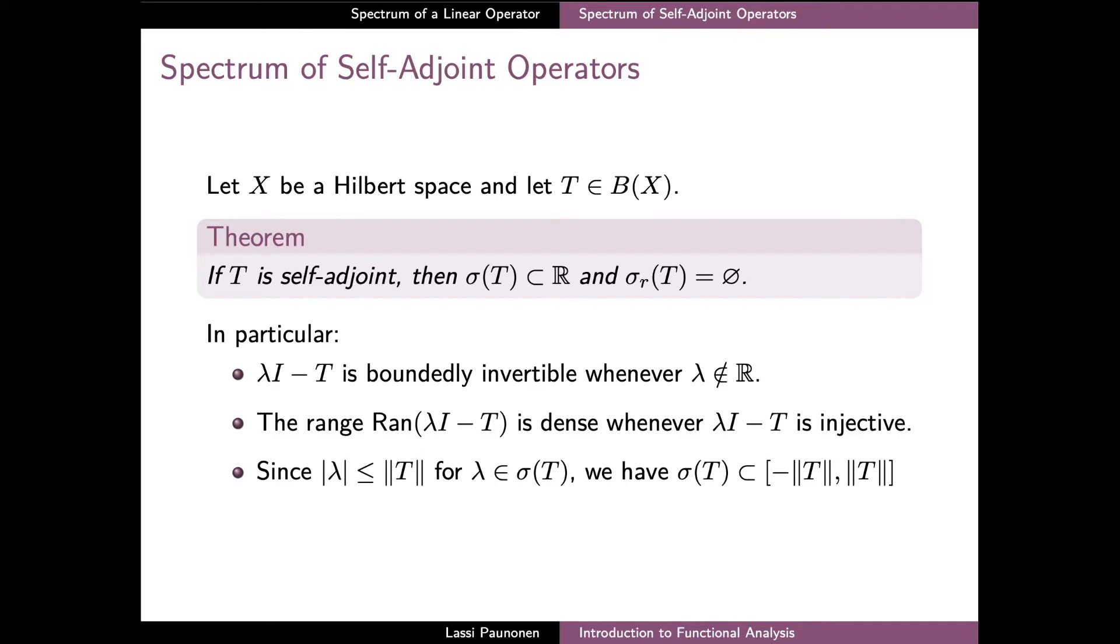Since we recall that the spectrum of a bounded operator is always a bounded set contained in a disk with radius equal to the norm of T, the spectrum of a self-adjoint operator is always contained in a closed real line from minus the norm of T to the norm of T.